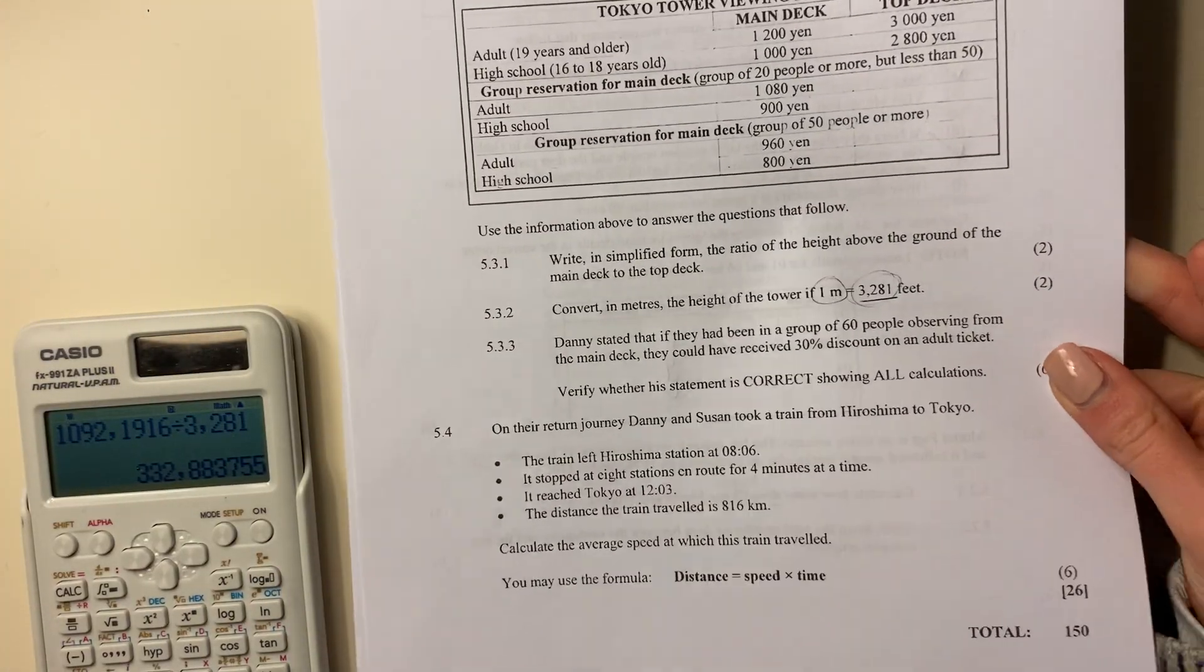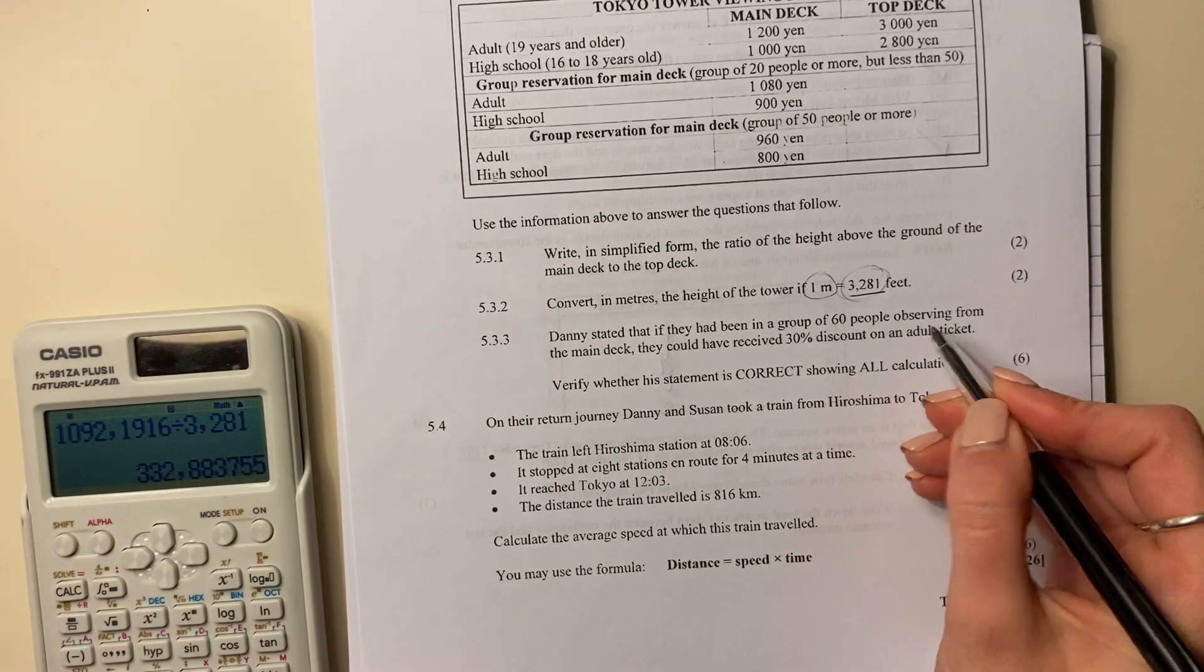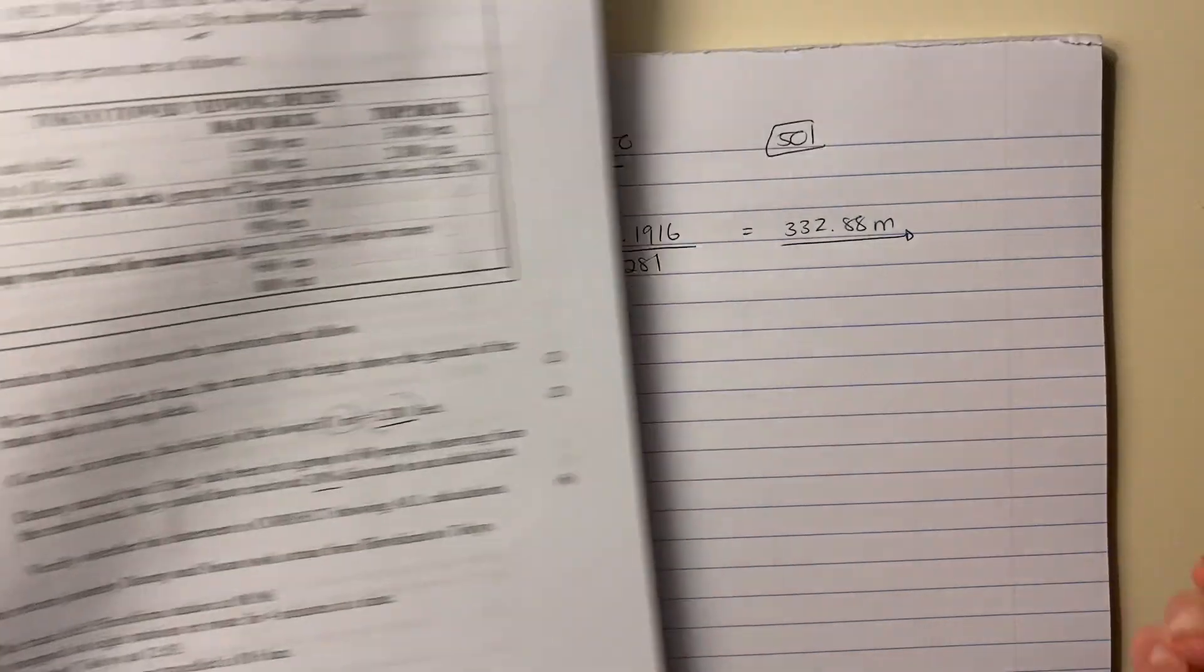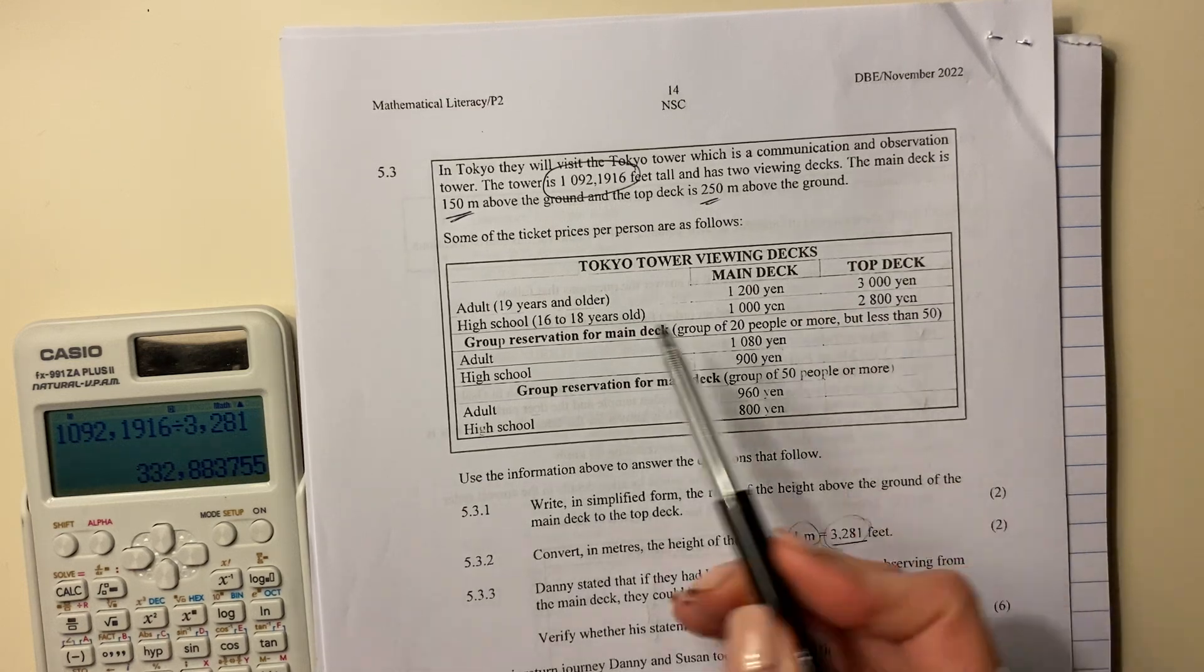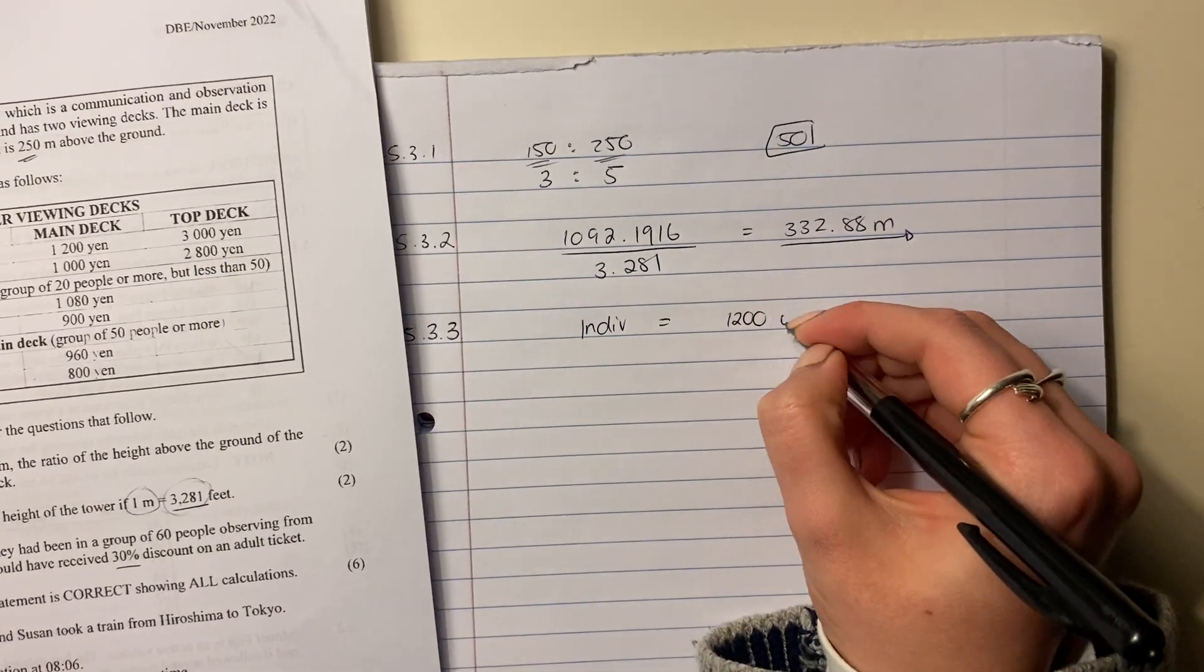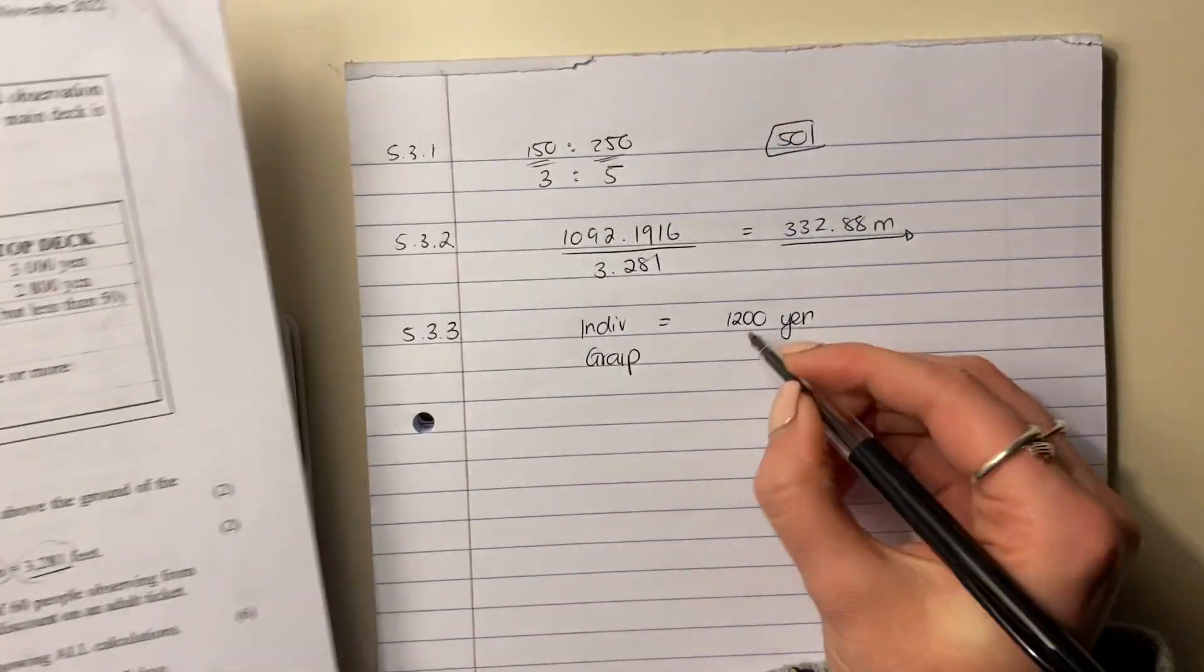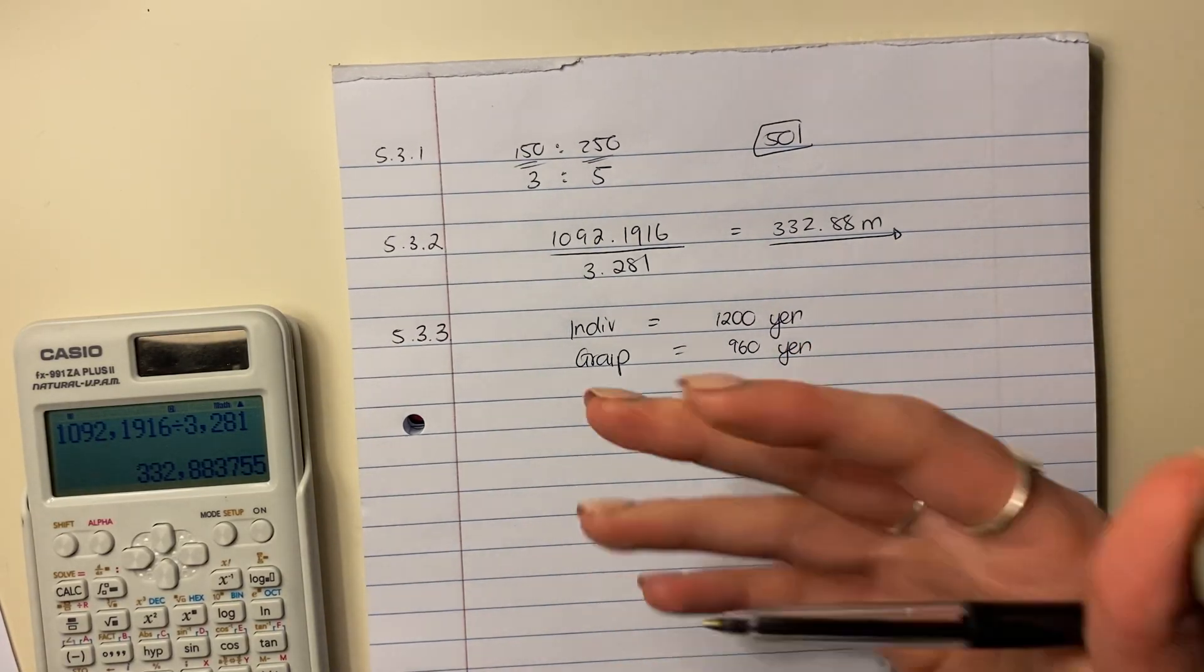Danny stated that if they had been in a group of 60 people observing from the main deck, they would have received a 30% discount on the adult ticket. Verify whether his statement is correct, showing all calculations. So if it was just an individual, they would have paid on the main deck this much. As part of a group, and the group was of 60, which is above 50, they would have paid 960. That's how much they would have paid. Now we have to convert this so that we can compare it in terms of percentage.